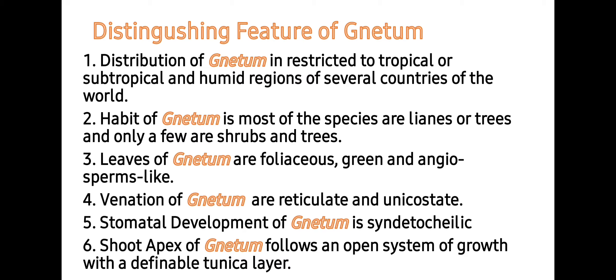Distribution of Gnetum is restricted to tropical or subtropical and humid regions of several countries of the world — they are generally present in warm and humid places. The habit of Gnetum in most species is lianas or trees, and only a few are shrubs. Lianas are woody climbers. Leaves of Gnetum are foliaceous, green, and angiosperm-like.